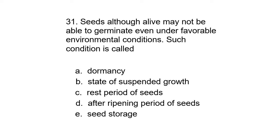Question 31. Seeds, although alive, may not be able to germinate, even under favorable environmental conditions. Such condition is called: A. Dormancy, B. State of suspended growth, C. Rest period of seeds, D. After ripening period of seeds, or E. Seed storage. The answer is Dormancy.